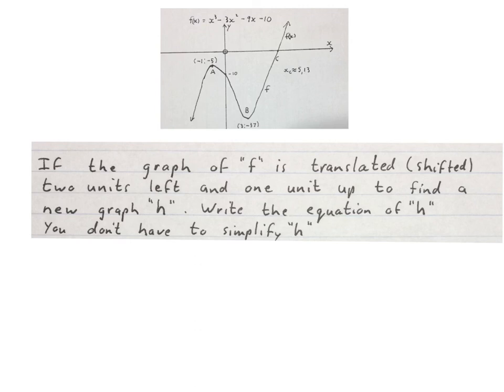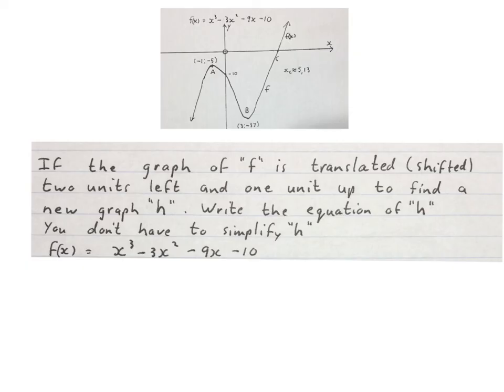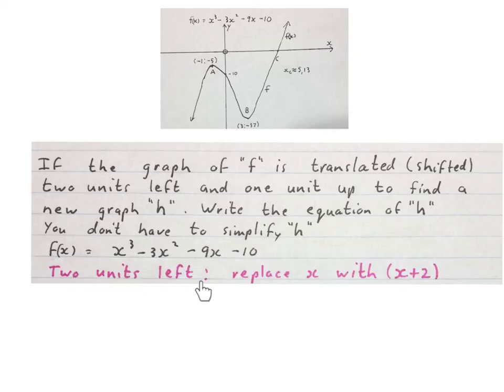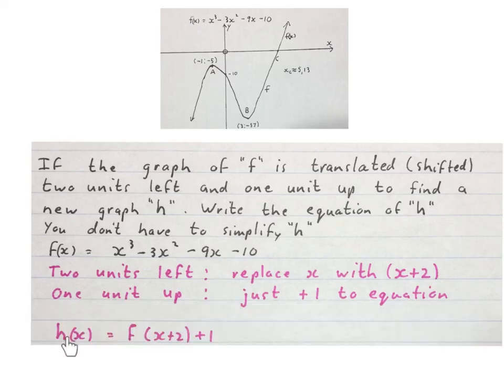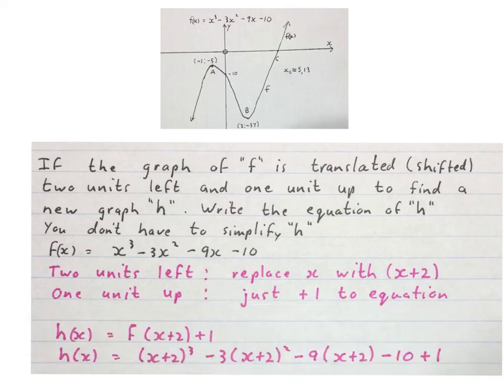Finally, another question you might run into with translations: if the graph of f is shifted two units to the left and one unit up to find a new graph h, write the equation of h — you don't have to simplify. Starting with the original equation of f of x, if you move two units left you replace x with x plus 2. If you move one unit up you add 1 to the whole equation. So to find h of x, replace all x values with x plus 2 and add 1 at the back. That is the new equation of h of x.